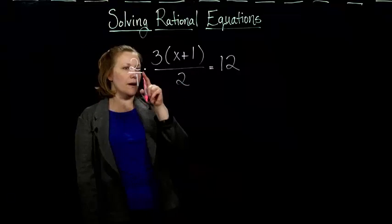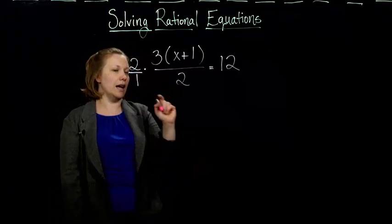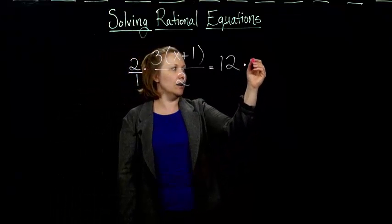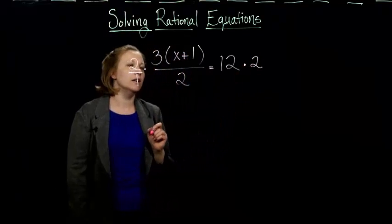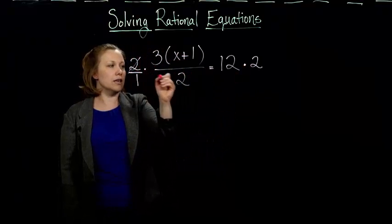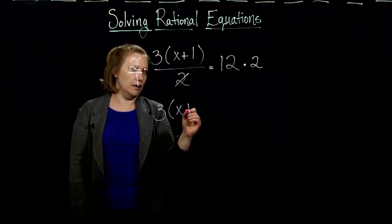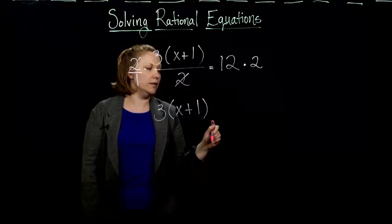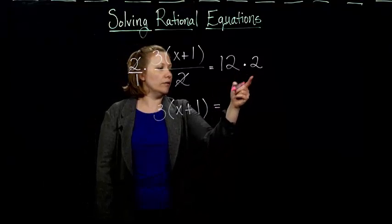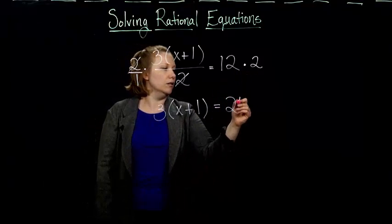Yeah, they cancel out. But if I multiply by 2 on this side, I have to multiply by 2 on the other side as well. So what happens? My 2's cancel out. And so I'm just left with 3 times x plus 1 equals, well, 12 times 2 is just 24.